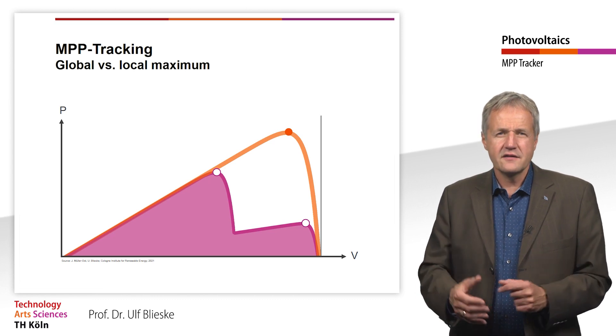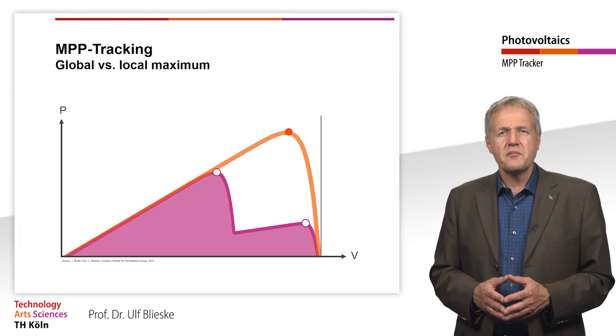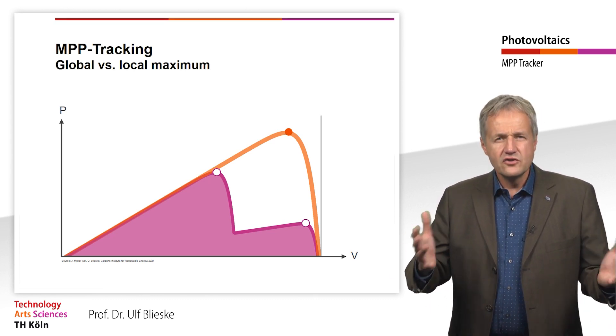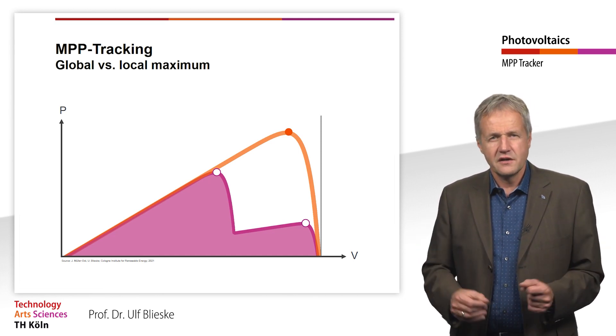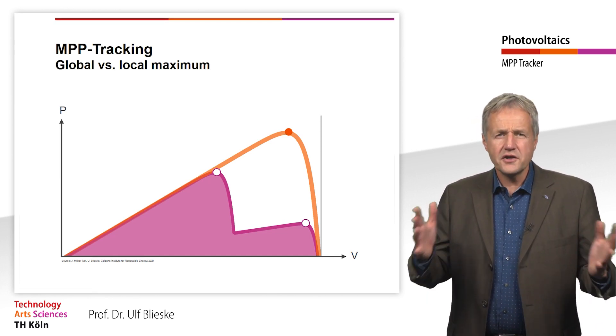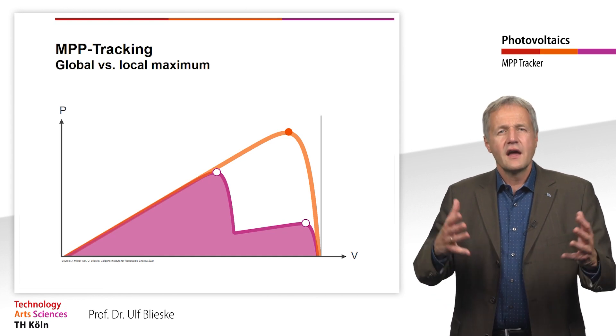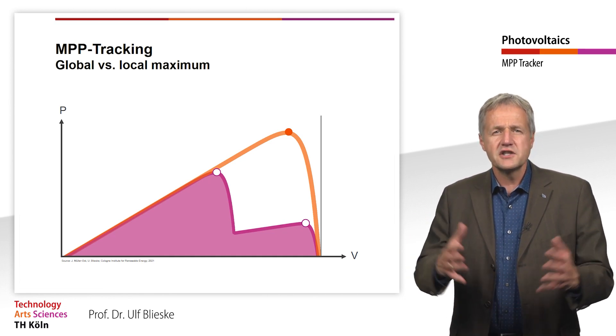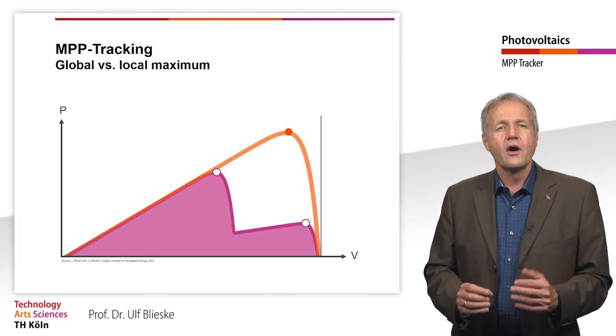So that leaves us with one last question. Which device does take care of the MPP tracking? As you may have guessed, the function of the MPP controller is usually integrated in the inverter. In stand-alone systems that are not connected to the power grid, MPP tracking can also be integrated in the charge controller of a battery.